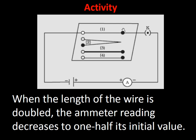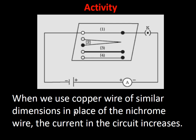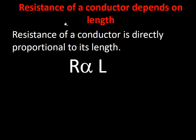An activity explores the effect of length and area on resistance using nichrome wire. When the length of the wire is doubled, the ammeter reading decreases to half — showing resistance is directly proportional to length. When a thicker wire (larger cross-sectional area) is used for the same material and length, the current increases, meaning resistance decreases. Using copper wire of similar dimensions instead of nichrome, the current changes — showing the material's nature matters.